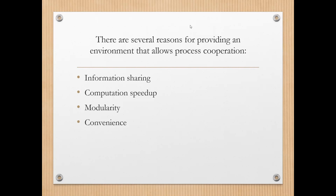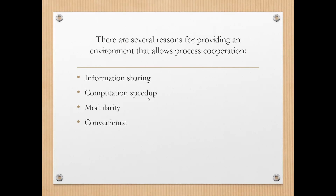When a task is broken down into several different subtasks, they are assigned to several different processes. Since all these processes belong to one single main task, those processes will need to communicate with each other so that their individual results can be merged at the end. That is another reason why we need to allow processes to cooperate — to achieve computational speedup by breaking down tasks and running them concurrently.